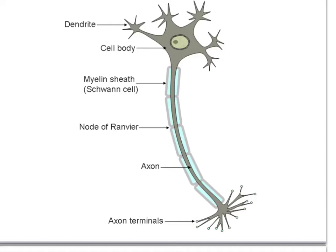So rather than travel along every part of the cell membrane, it can skip and do little jumps. And they're spaced just the right distance along to allow it to jump down and travel very quickly down the axon.